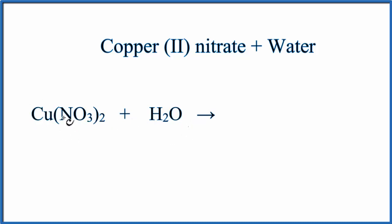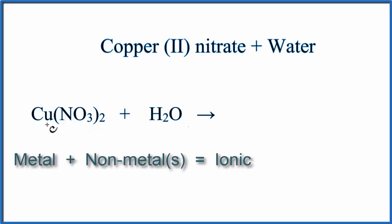Copper is a metal, and then N and O, those are non-metals. So when we have a metal and non-metals, we do have an ionic compound, and we need to take into account charge.